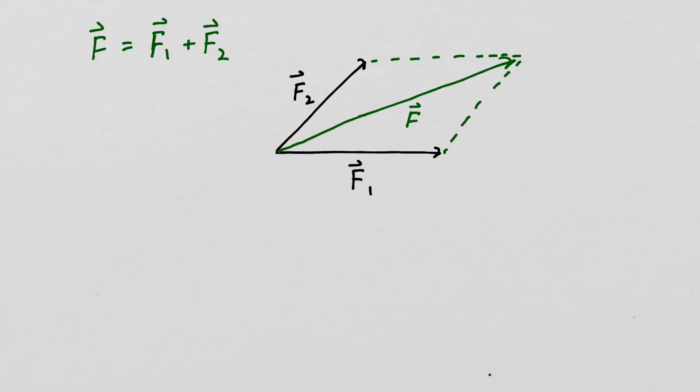Another way to think of this graphical addition of two vectors is with this triangle right here. So we place F1 and then we place the tail of F2 at the tip of F1 and the third side of the triangle would be F, the sum of F1 plus F2.